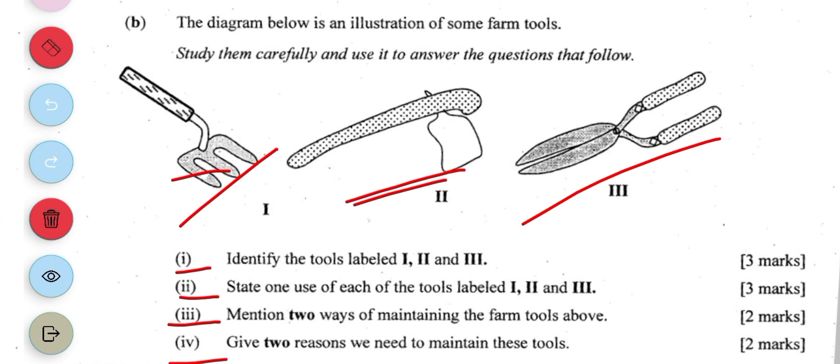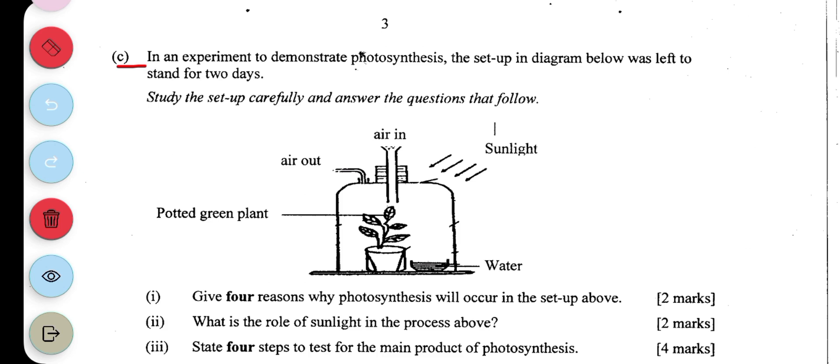An experiment to demonstrate photosynthesis. The setup in diagram below was left to stand for two days. Study the setup carefully and answer the questions that follow. You have something like a hollow glass tube with a potted plant, air coming in.